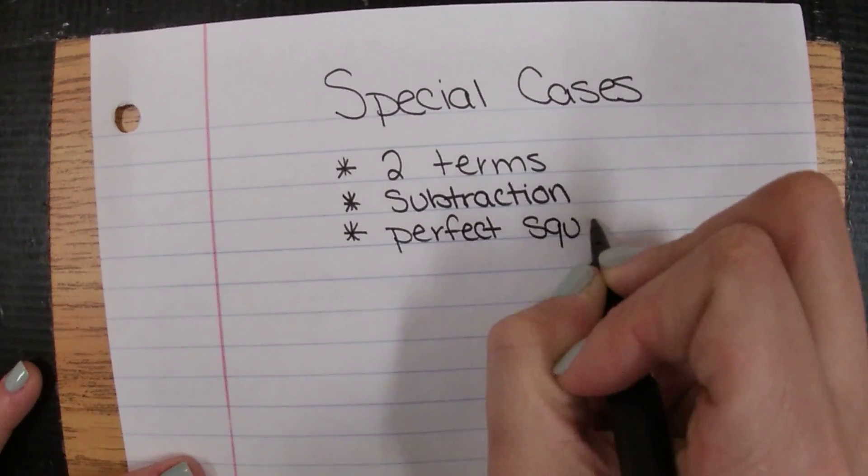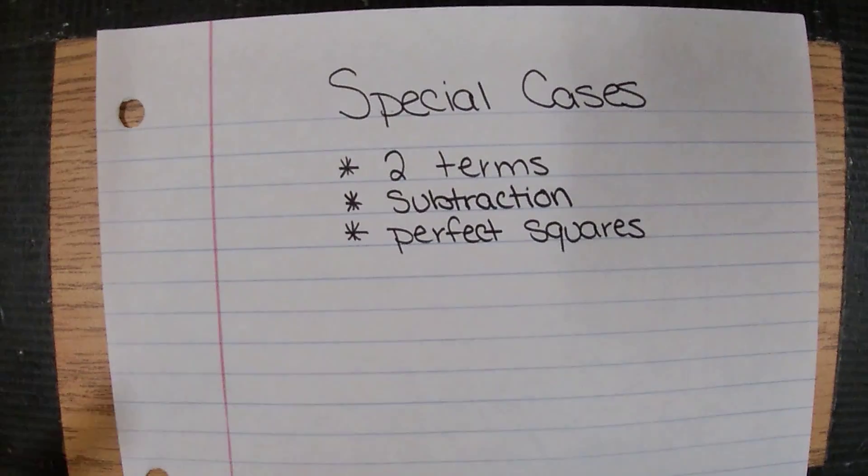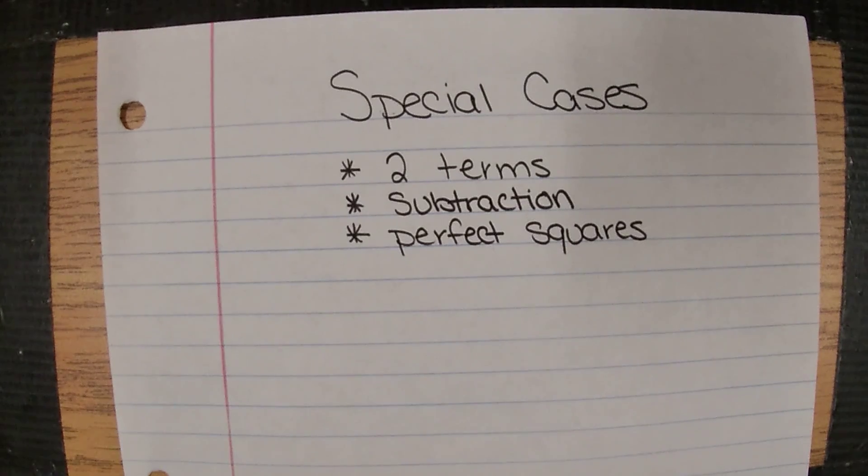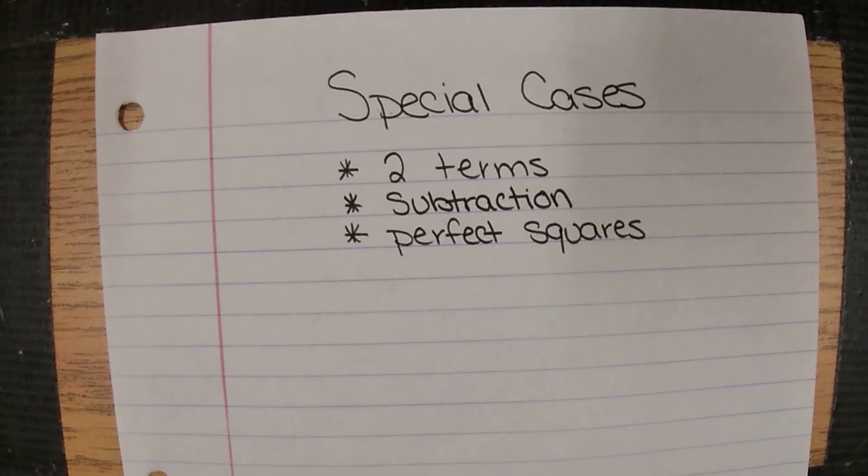A perfect square is anything that is created by multiplying a number times itself. So 25 is a perfect square because 5 times 5 is 25. 36 is a perfect square because 6 times 6 is 36.